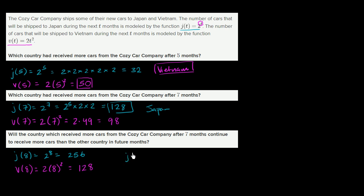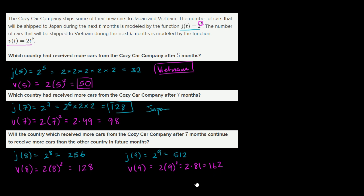At month 9: j(9) = 2 to the ninth power = 256 times 2 = 512 cars. While v(9) = 2 times 9 squared = 2 times 81 = 162. So now it's way more than double — actually more than triple. You see that once you get past those initial few months, the exponential function is increasing at a much, much faster rate.